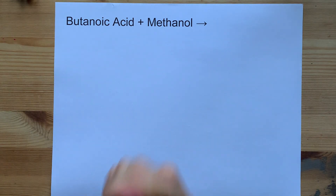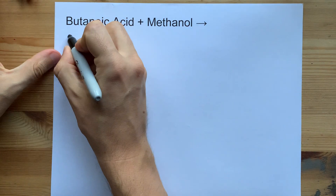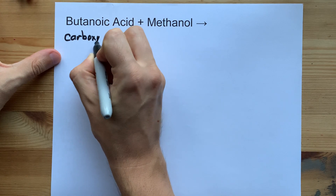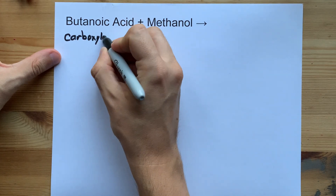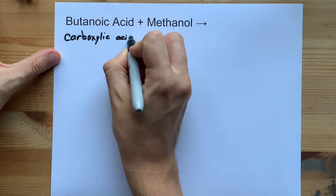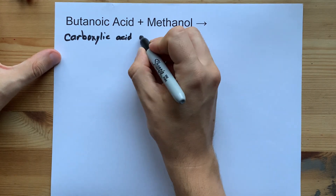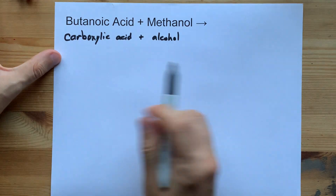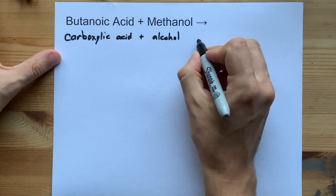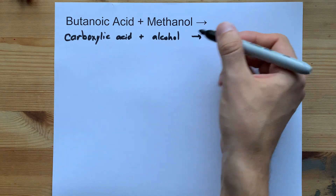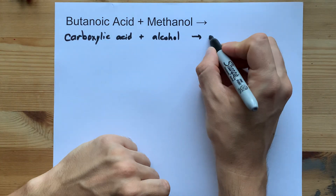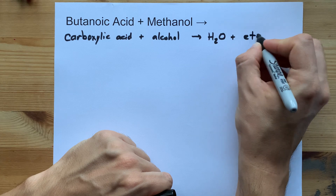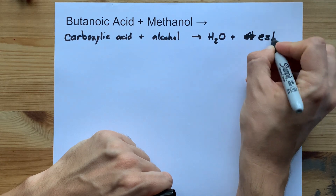When butanoic acid reacts with methanol, you're going to end up with an ester. Any 'oic acid' is called a carboxylic acid, and anything that ends with 'ol' is an alcohol. You need to memorize that carboxylic acids and alcohols will react together in either acidic or basic solutions to give you water as a byproduct, but also something called an ester.